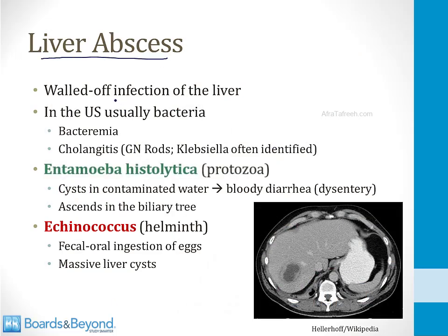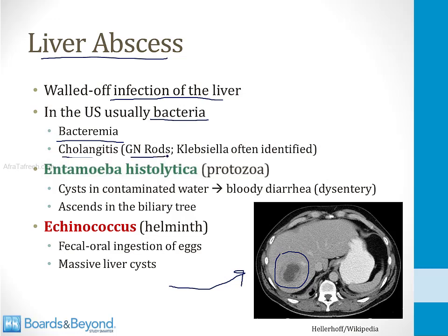A liver abscess is a walled-off area of infection inside the liver. In industrialized countries like the United States, this is almost always caused by bacteria. There are two ways bacteria can get to the liver and form an abscess. The first is via bacteremia — if you have bacteria in your bloodstream, they can travel to the liver and form an abscess. The second way is if bacteria climb up through the biliary tree from the GI tract, which is called cholangitis. Gram-negative rods from the intestines can get into the liver and form an abscess; Klebsiella is a classic bacterium to cause an abscess by ascending from the intestines.